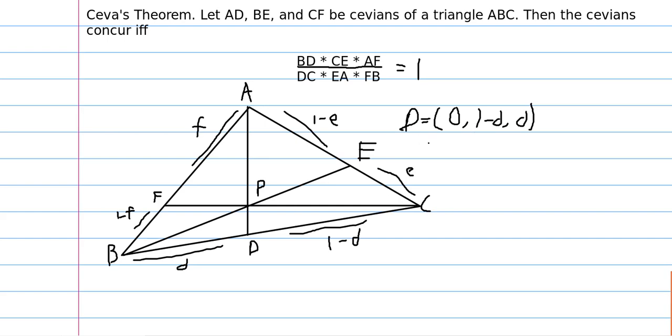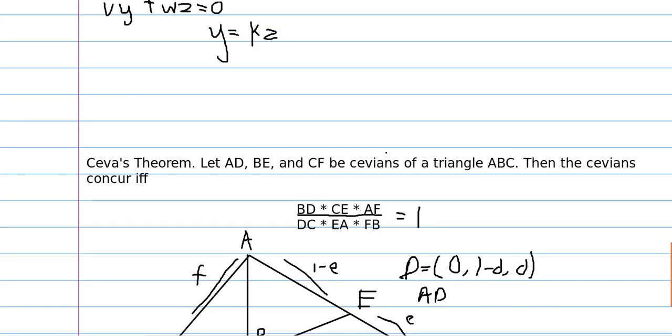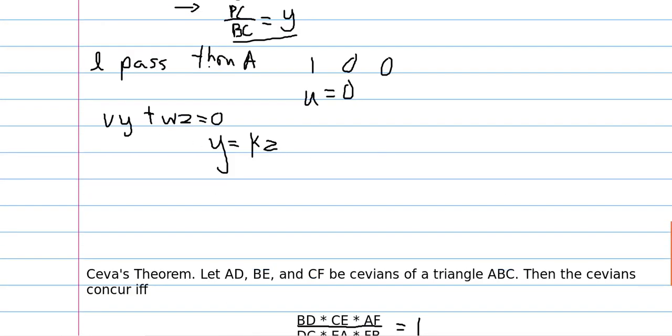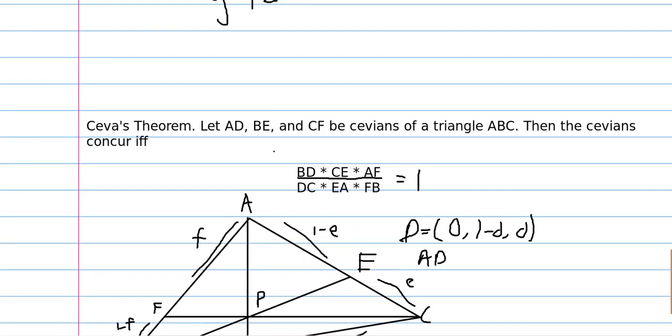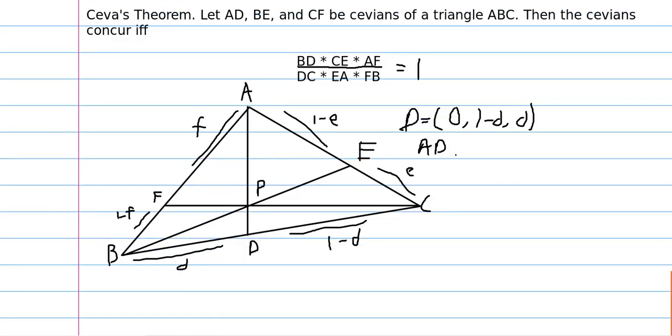So then the line AD... we saw that if a line passes through A then Y and Z are directly proportional. So AD has the form Y is equal to 1 minus D over D Z. We can just create this number K because we notice that if we plug in D for Z we get 1 minus D for Y.